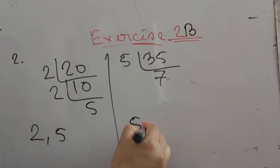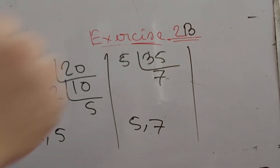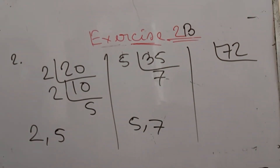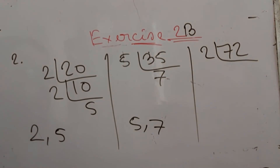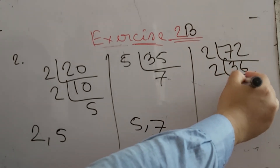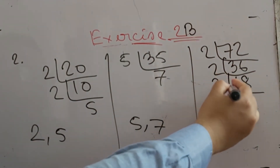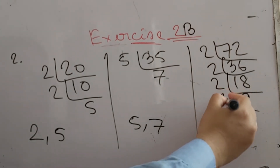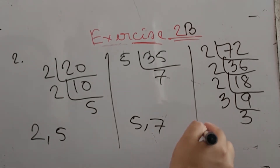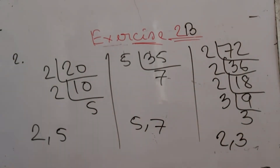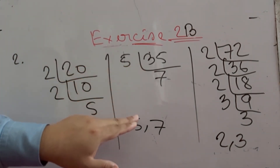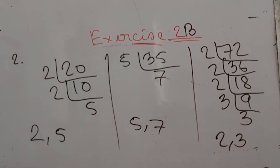The prime factors of 35 are 5 and 7. Now the last part: 72. 72 is an even number, so we divide by 2 to get 36, then 36 by 2 to get 18, then 18 by 2 to get 9, then 9 by 3 to get 3. So the prime factors of 72 are 2 and 3. Prime factors of 20 are 2 and 5; prime factors of 35 are 5 and 7; prime factors of 72 are 2 and 3.